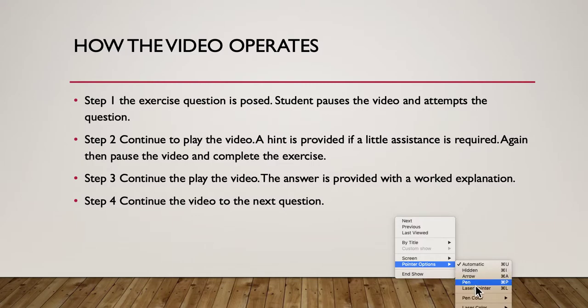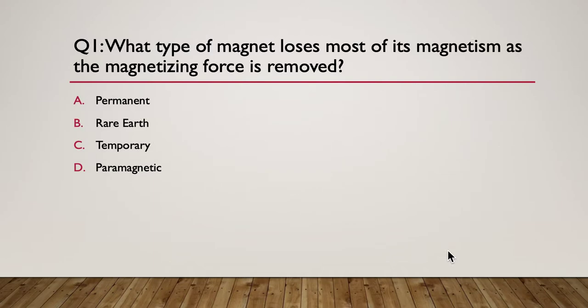So let's get started with our first question. Question one: what type of magnet loses most of its magnetism as the magnetizing force is removed? Is it a permanent magnet, a rare earth magnet, a temporary magnet, or a paramagnet? Pause here.